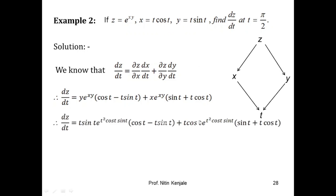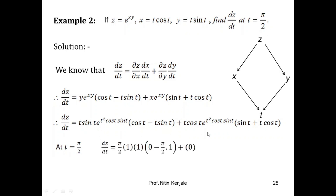After substituting x = t·cos(t) and y = t·sin(t) and simplifying, we put t = π/2 into the expression. After simplification, we get dz/dt = −π²/4. You can pause the video and check the calculations.